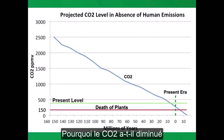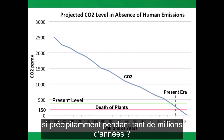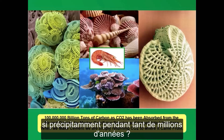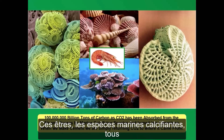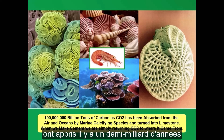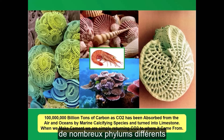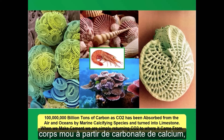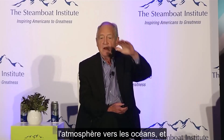Why did CO2 decline so precipitously for so many million years? Marine calcifying species — all of which learned half a billion years ago from many different phyla to make armor plating for their soft bodies out of calcium carbonate — caused the CO2 to come out of the atmosphere into the oceans, constantly down and down and down.